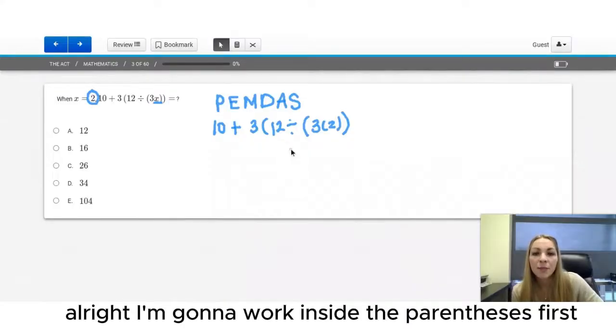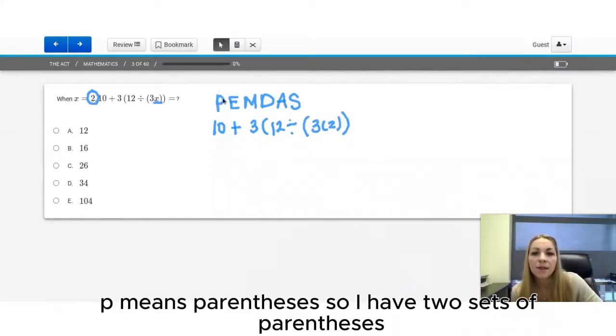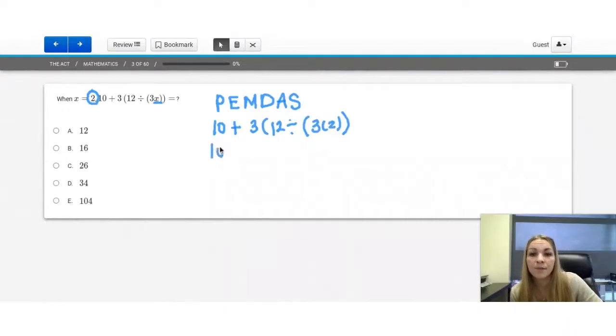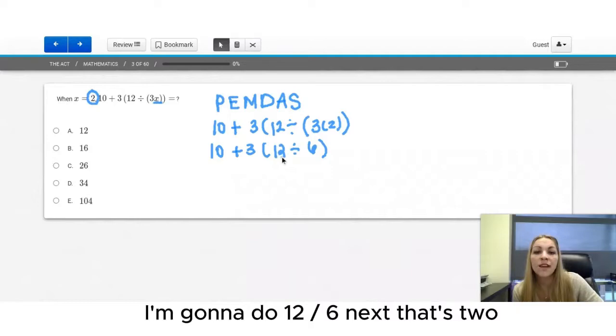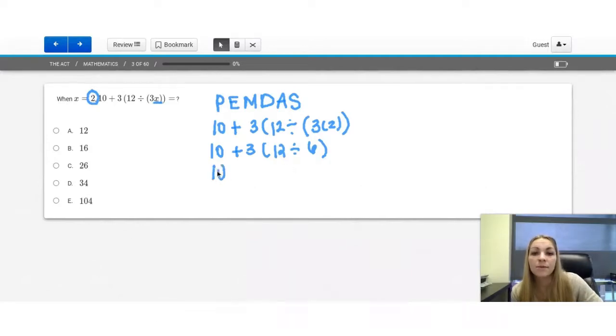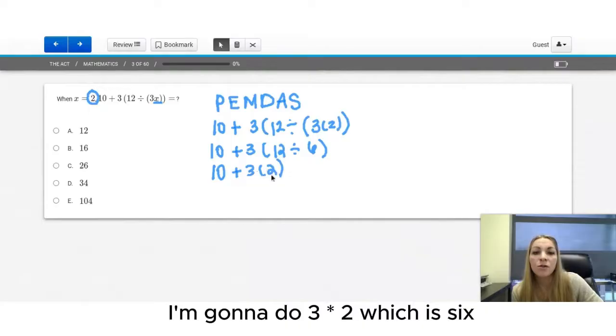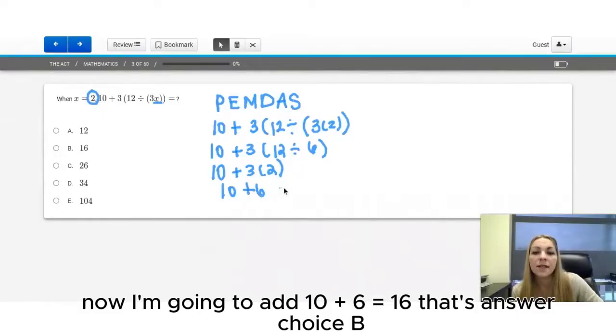I'm going to work inside the parentheses first. P means parentheses. So I have two sets of parentheses. I'm going to work on the innermost parentheses. So I'm going to do 3 times 2 first. I have another set of parentheses. I'm going to do 12 divided by 6 next. That's 2. No exponents. I do have multiplication. I'm going to do 3 times 2, which is 6. Now I'm going to add 10 plus 6 equals 16. That's answer choice B.